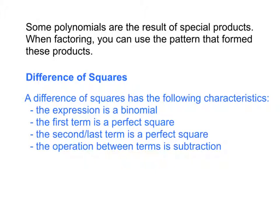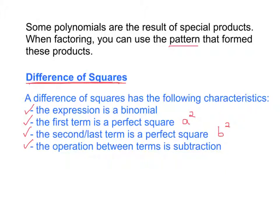What we've been looking at in the investigation is that some polynomials are the result of special products. When factoring those special polynomials, we can use the pattern that formed the products to help us factor them. The first special type is called a difference of squares. A difference of squares must have the following characteristics: the expression must be a binomial; the first term must be a perfect square, which we call a squared; the last term must also be a perfect square, which we call b squared; and the operation between the two terms must be subtraction — that's why it's called a difference of squares.